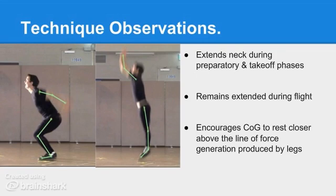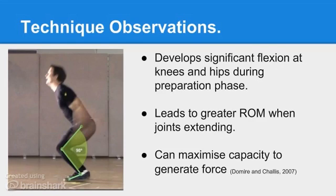This is important in achieving maximal height from the jump. If there is a misalignment between his centre of gravity and the ground reaction forces produced, a torque may be created which rotates his centre of gravity, leading to translation of his body mass in planes other than the vertical, which would detract from maximum height being gained. Another positive aspect of his technique is the degree of knee and hip flexion and ankle dorsiflexion he attains during his preparatory phase. This means a greater amount of angular distance these joints can travel during take-off, which serves to increase the time period over which force is generated and can lead to a greater amount of force produced overall.